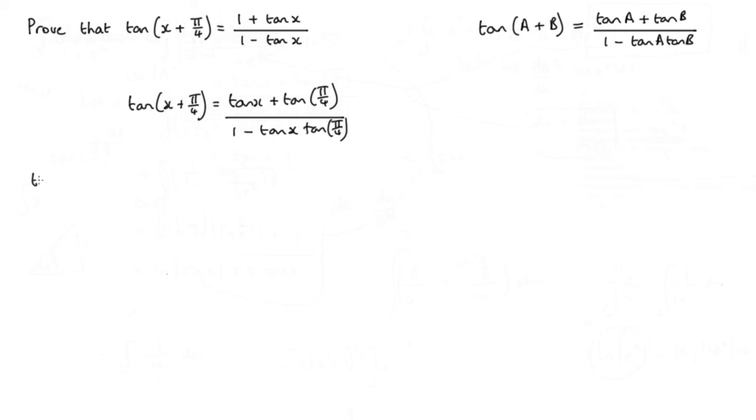Now tangent of pi over 4 is actually equal to 1. So using that fact, what we end up with is tan x plus 1.